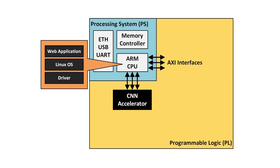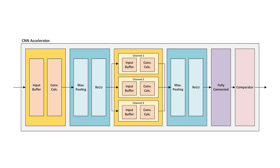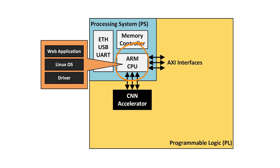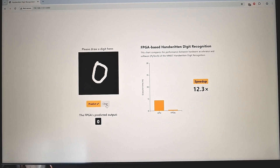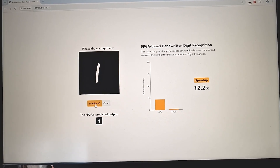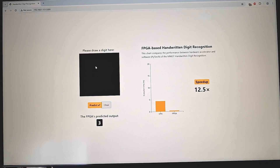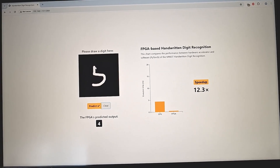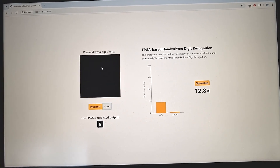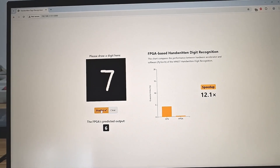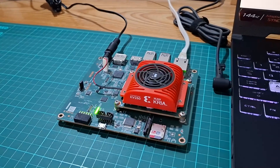The focus of the course is on the system design level — how to integrate a CNN module written in Verilog HDL with the application processor running Linux. The final result of this project is a web application for taking a handwritten digit and sending this data to be processed with a CNN accelerator on the FPGA.